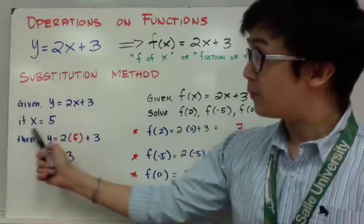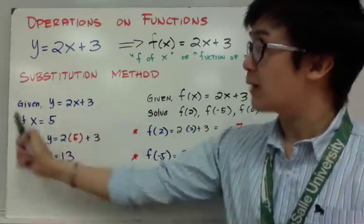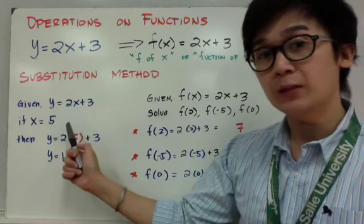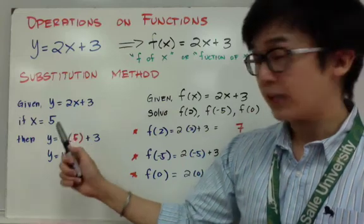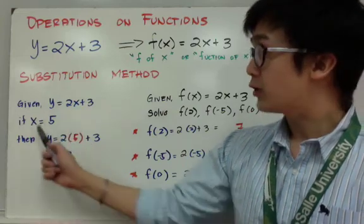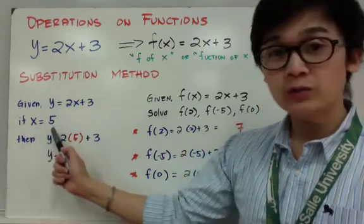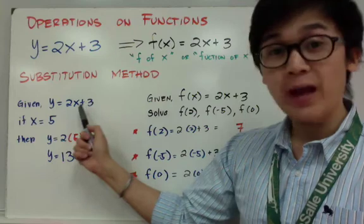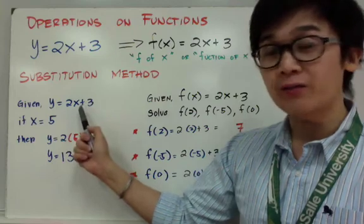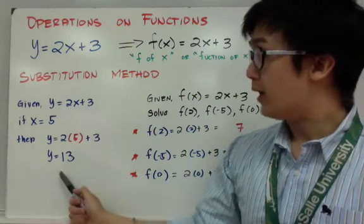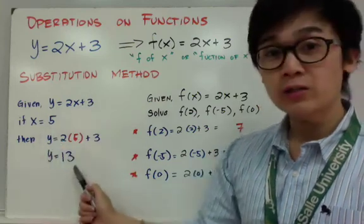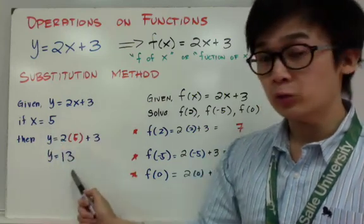We are familiar with this type of question because this is what we have been doing in basic algebra. So if x is equal to 5, substitute the value of 5 to x so that you can find y. If x is 5, y is equal to 13 by substitution method.